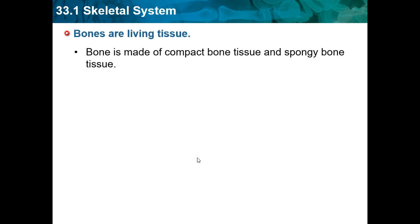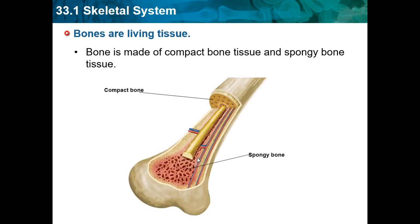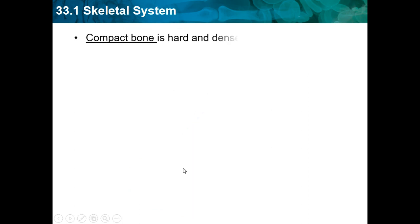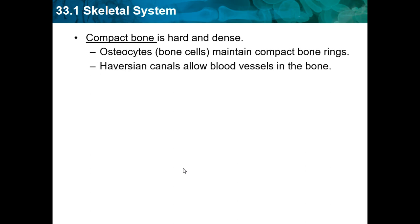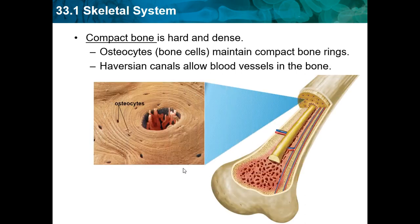Bones are living tissue. Bone is made of compact bone tissue and spongy bone tissue. Compact bone tissue is what makes it hard, and it's spongy on the inside. Compact bone is hard and dense. Osteocytes are bone cells that maintain compact bone. Haversian canals allow blood vessels into the bone — these are the little holes inside the bone.